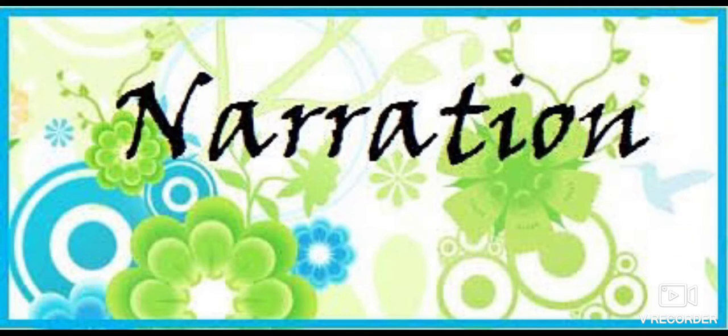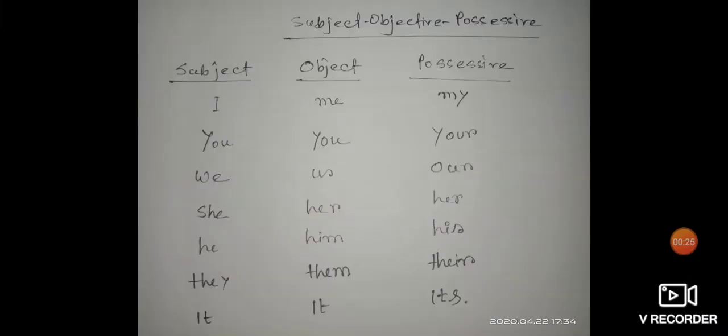In the last class I discussed up to change a person. Now I would like to move on to an important issue that is often a source of mistakes for most students — how can we change the possessive form and objective form from direct speech to indirect speech? Before going to this rule, let's have a look at some examples.